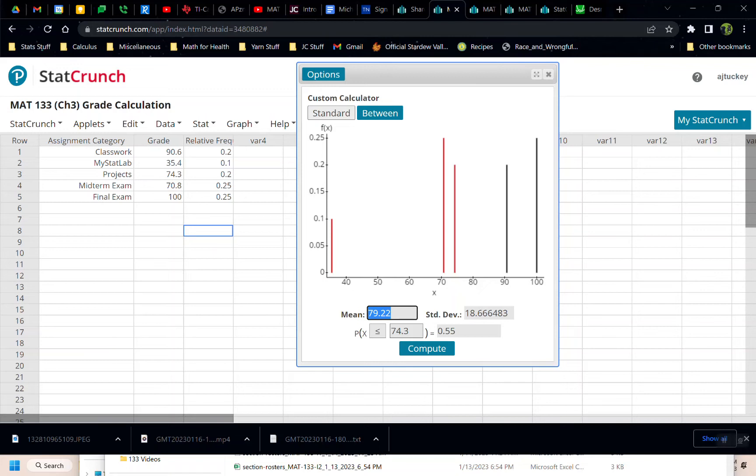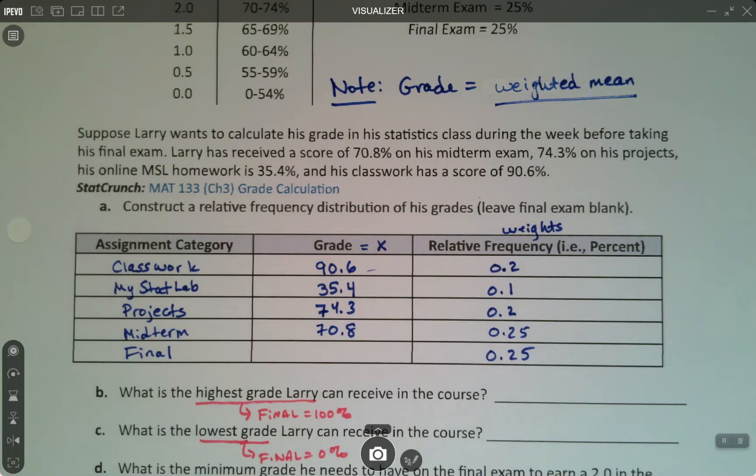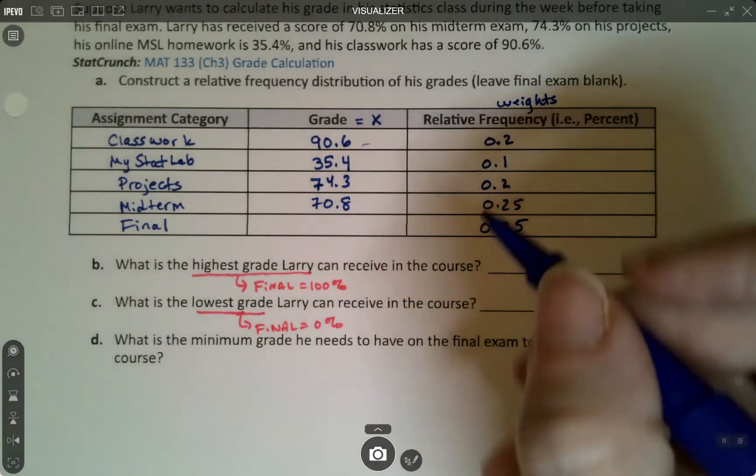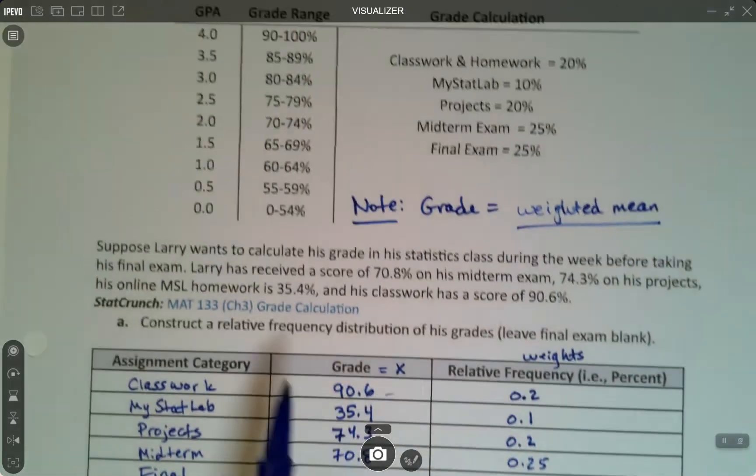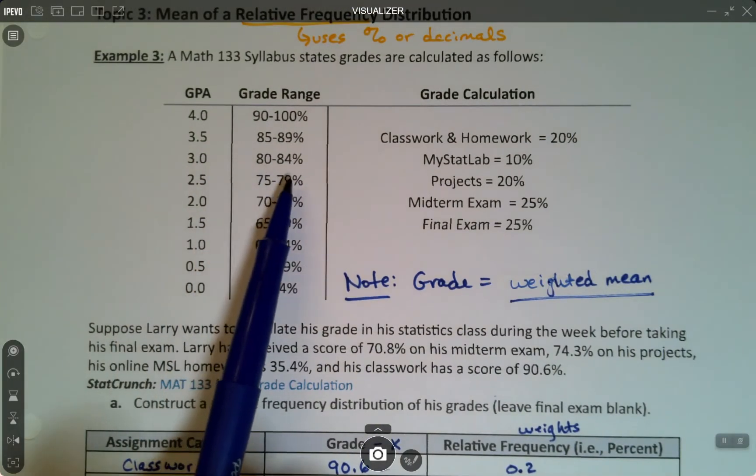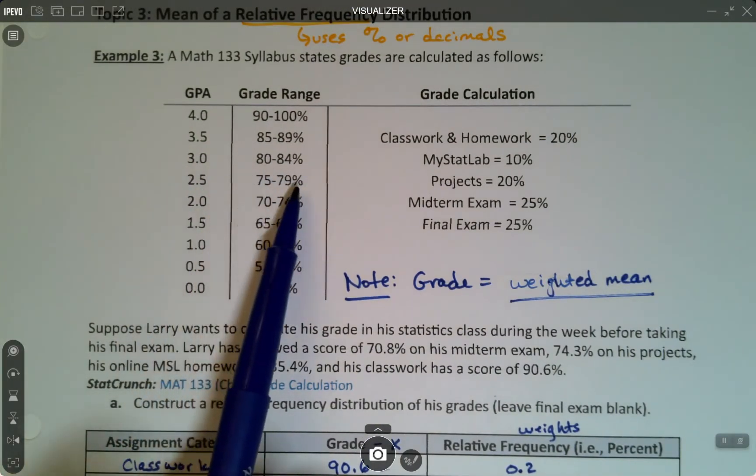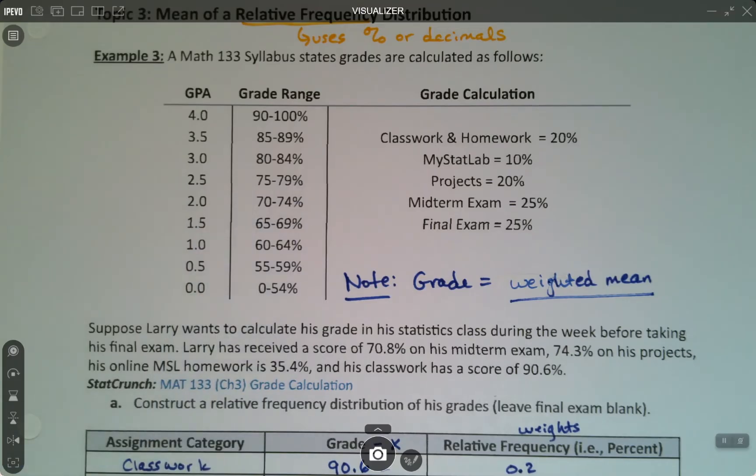That's the highest grade that Larry could possibly get in this class. So let me close this window and apparently this one too. They're blocking my view. So the highest grade he could get is a 79.2%. Which if we go back up and look, 79.2 actually is a 2.5, right close to the border, but it is a 2.5.